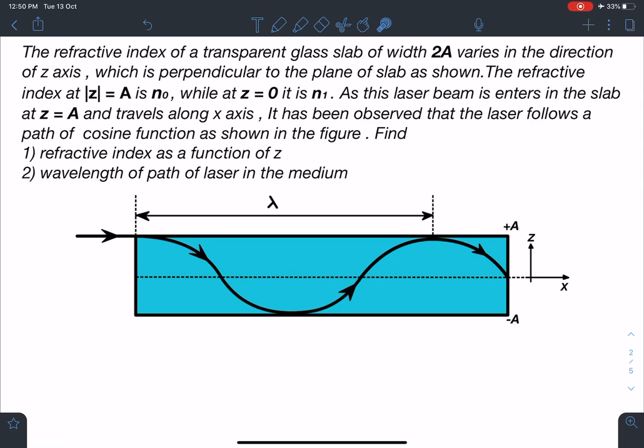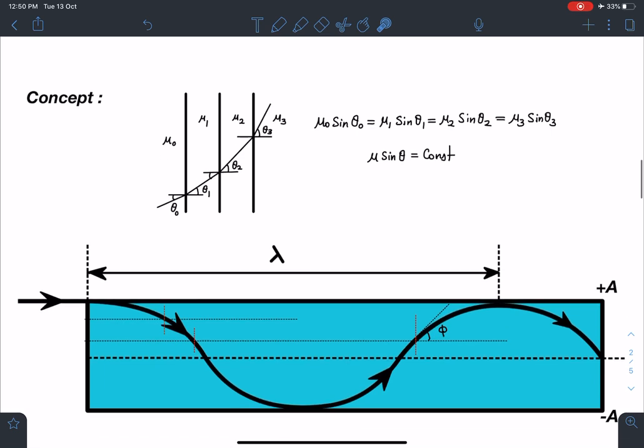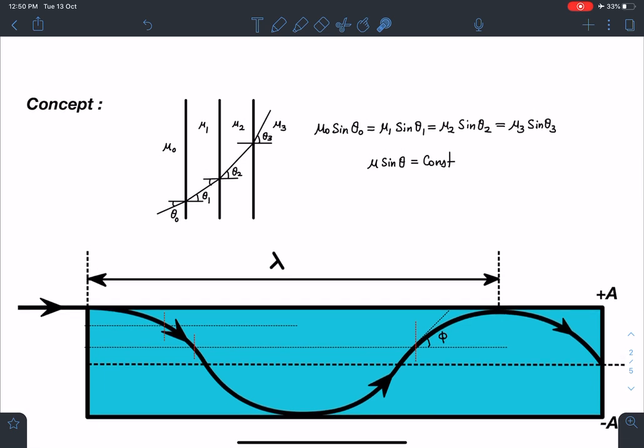Let's discuss the concept part of this problem. It's similar to those slab problems where multiple slabs are placed. So as you can see in the diagram here, a slab of medium mu0, mu1, mu2, mu3 and corresponding angles are theta0, theta1, theta2, theta3.